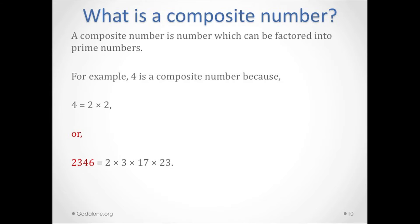So what is a composite number? A composite number is a number that can be factored out into prime numbers. For example, 4 is a composite number because 4 is 2 times 2. 6 is a composite number — it's 2 times 3 times 17 times 23. And these are its prime factors.